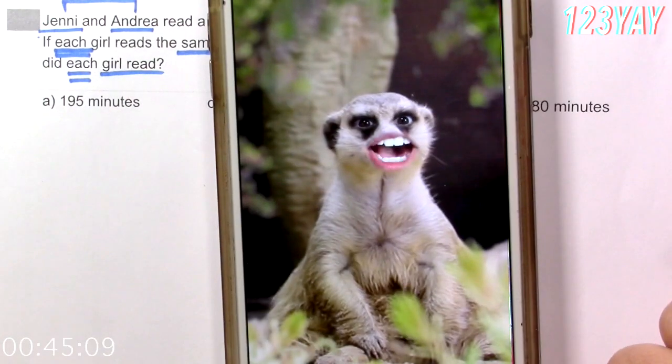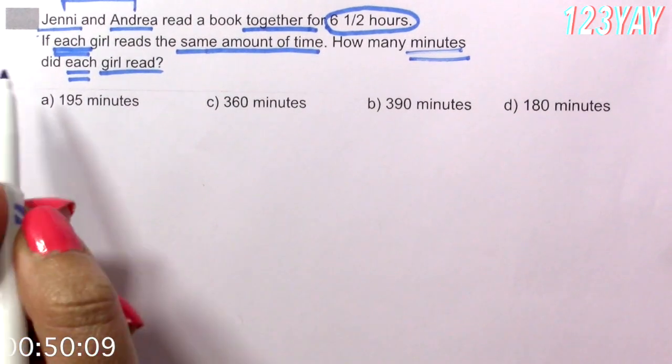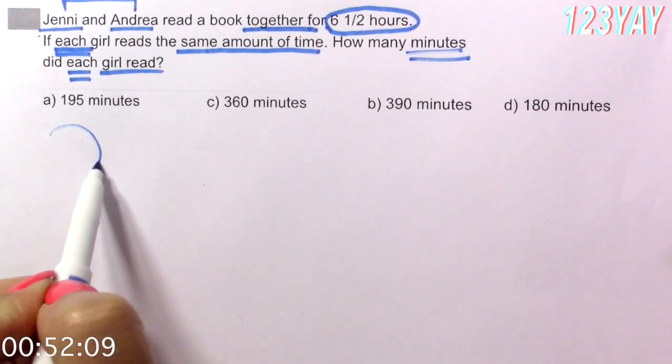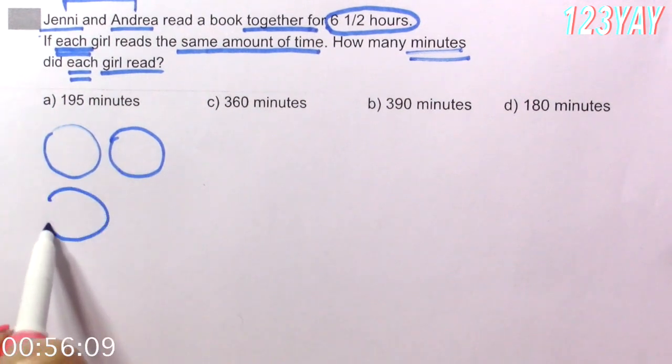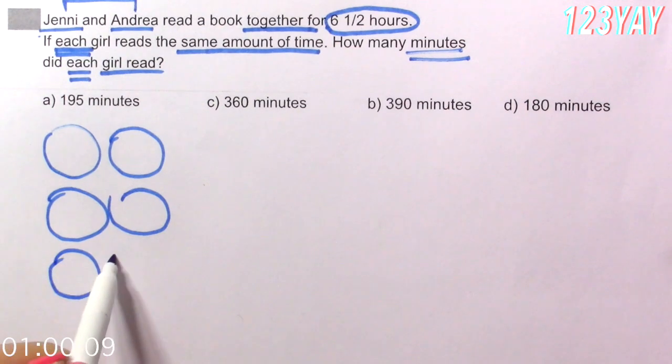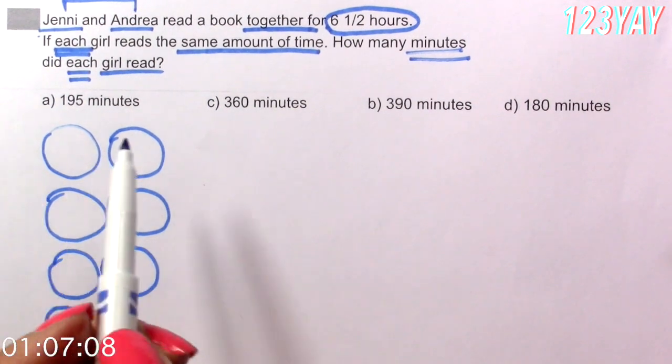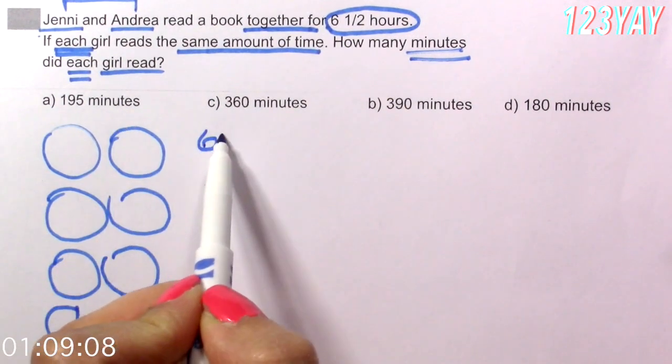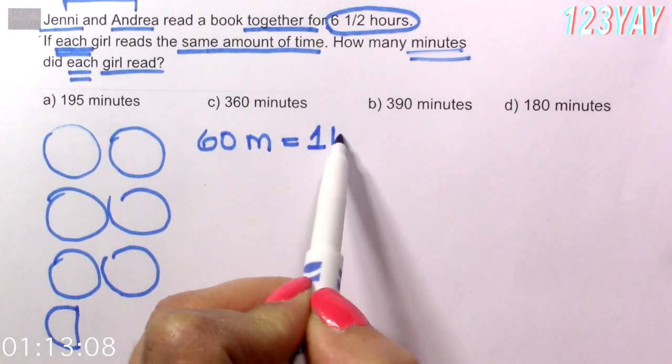Draw a model! Let's draw a model of six and a half hours. So, one, two, three, four, five, six, and one half. Do you know how many minutes are in an hour? Here, there are 60 minutes in one hour.